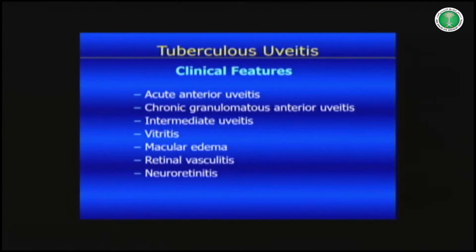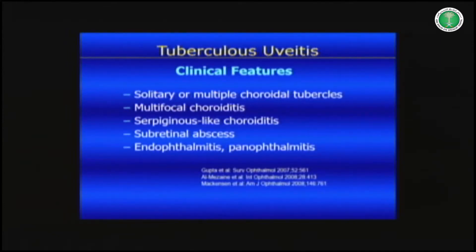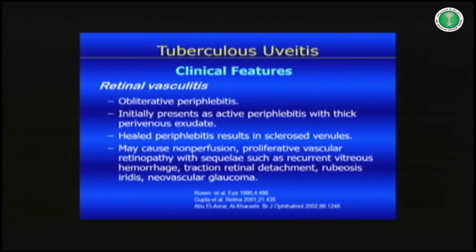The clinical features you expect to see in a patient with tuberculous uveitis include: acute anterior uveitis, chronic granulomatous anterior uveitis, intermediate uveitis, vitritis, macular edema, retinal vasculitis, neuroretinitis, choroidal tubercles, multifocal choroiditis, serpigenous-like choroiditis, subretinal abscess, endophthalmitis, and panophthalmitis. Retinal vasculitis in tuberculosis is very peculiar — it tends to be obliterative peripheral phlebitis that destroys retinal circulation and causes severe retinal ischemia.